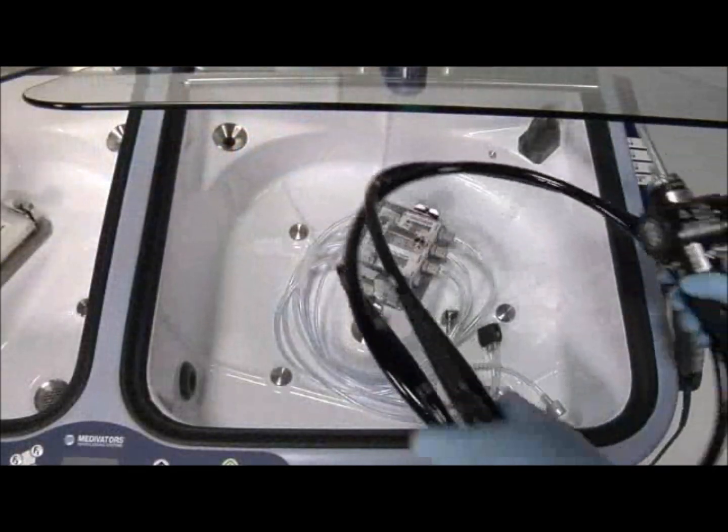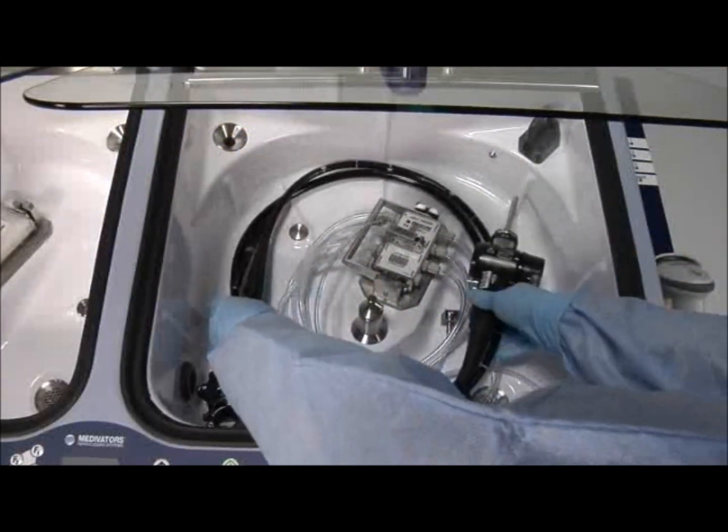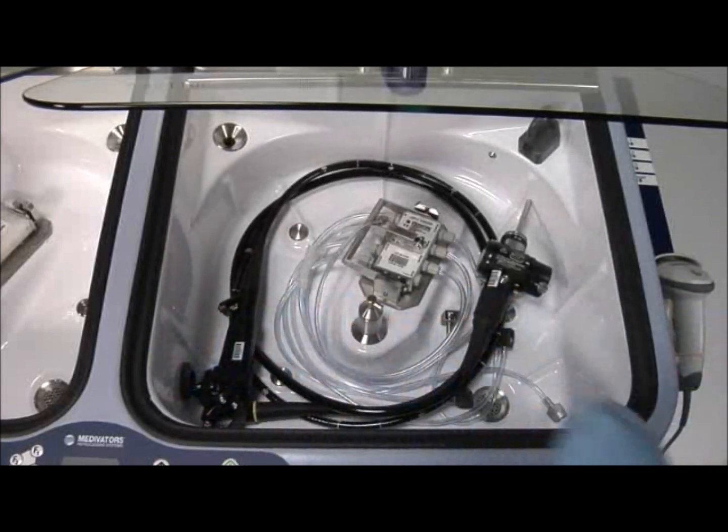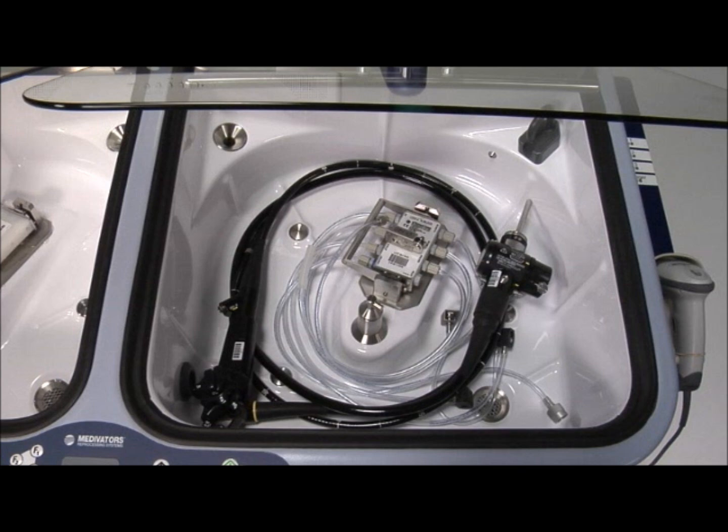Put the endoscope in the basin. Place the control section in the lower left corner of the basin and the light guide connector at the right middle. The distal end should be positioned so that fluids passing through it into the basin will be clearly visible.